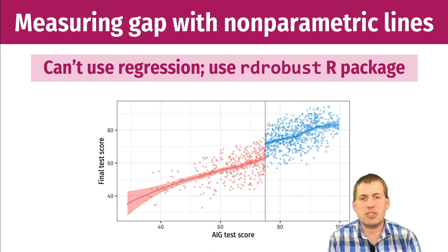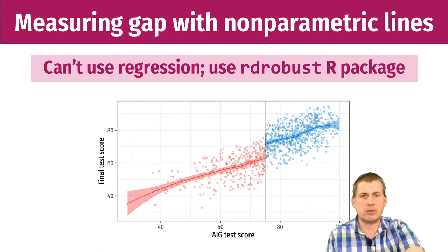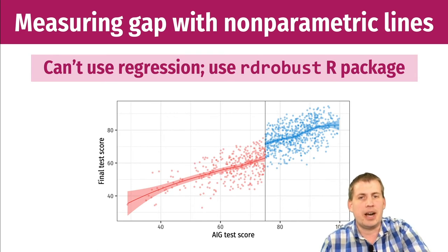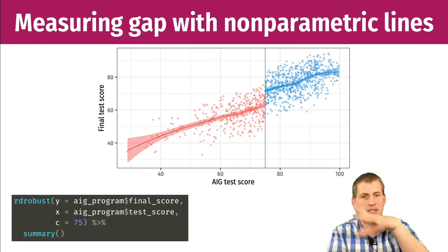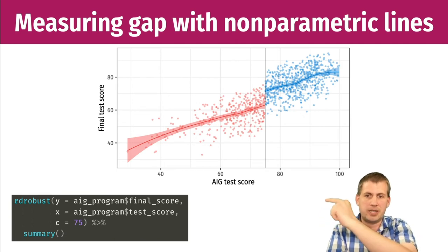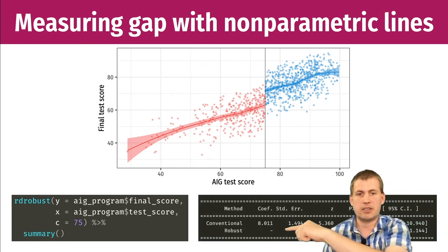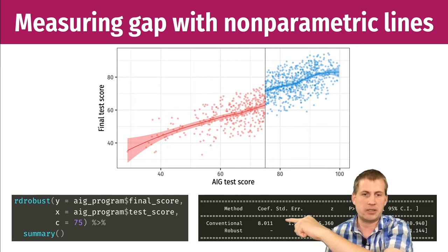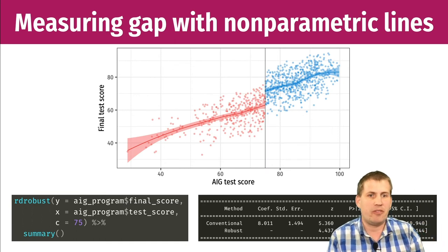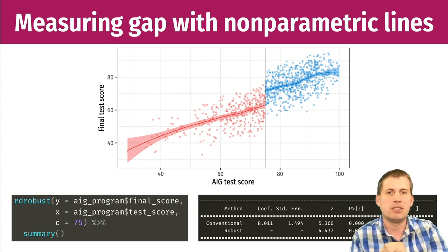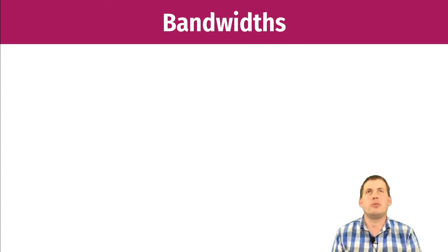If you're measuring the gap with non-parametric lines, you can't use regular regression because there's no math formula for the curvy lines. Instead, you use a special R package called rdrobust, which uses fancy methods to estimate the gap size non-parametrically. You provide your y variable, your x variable, and the cutoff, and it outputs results. In the AIG example, rdrobust gives a coefficient of about 8 points — slightly lower than the regression estimate but still fairly large and statistically significant with a p-value of zero.